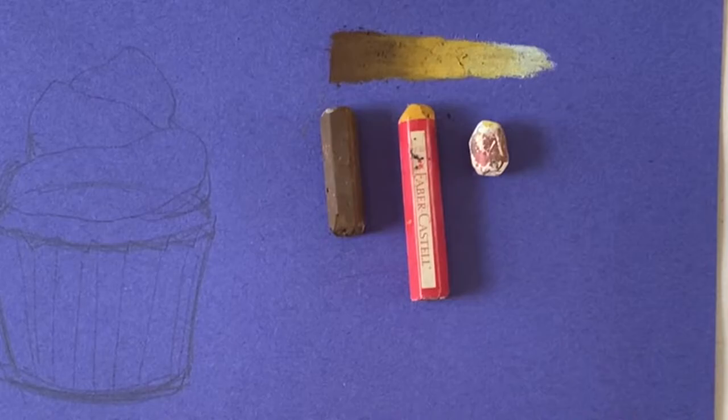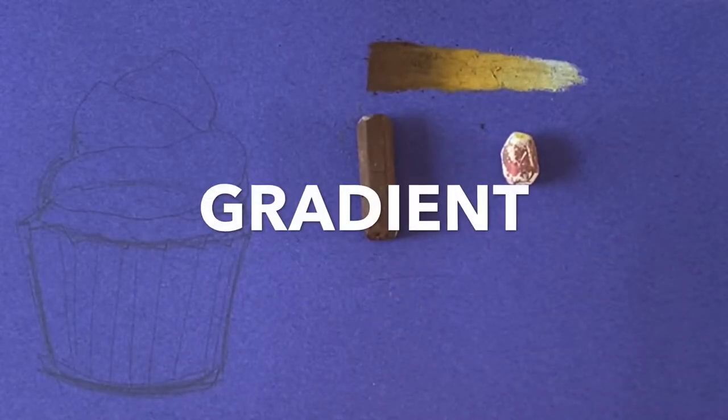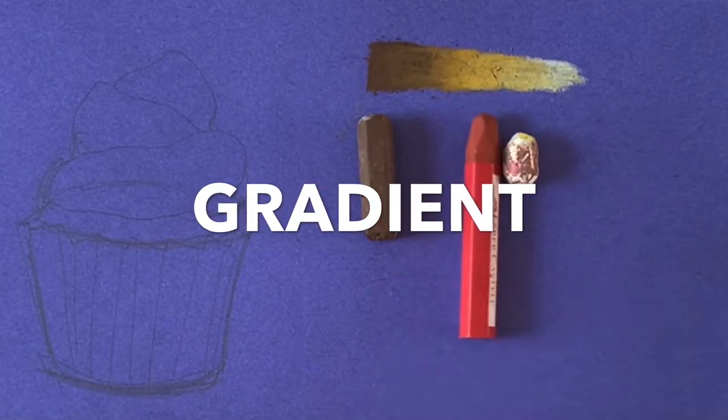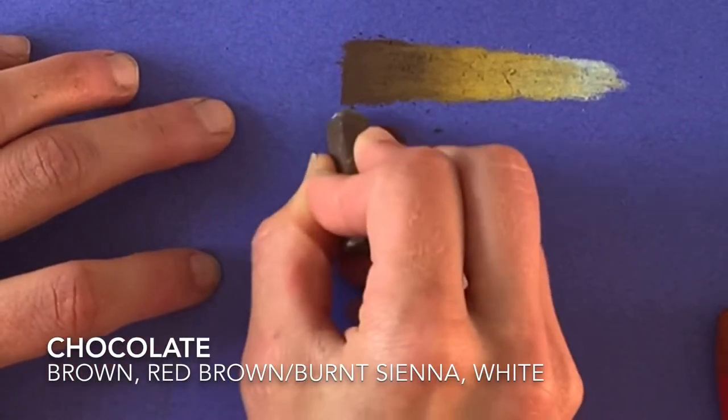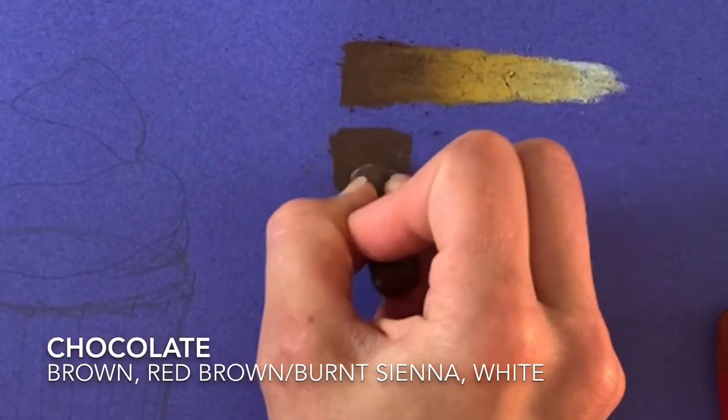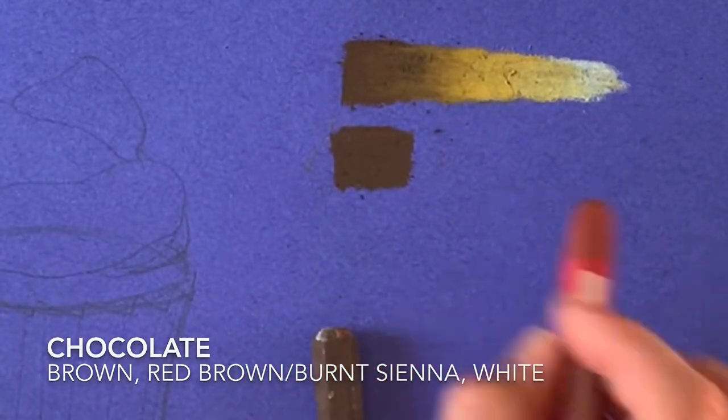Dark to medium to light creates a gradient, and we will repeat these steps to create a variety of different colors. For chocolate, I like to use the same dark brown and then I blend and mix with my burnt sienna or my red brown.